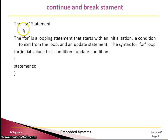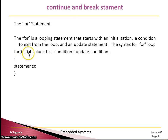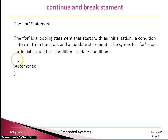The for loop is another version of a looping statement. Its syntax is: for(initial value; test condition; update condition) — then write the statements you want to execute. If there is only one statement below the for, you don't need curly brackets. If you want multiple statements, the curly brackets are mandatory.